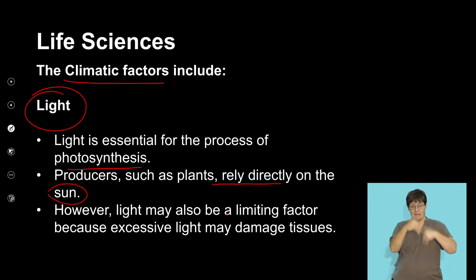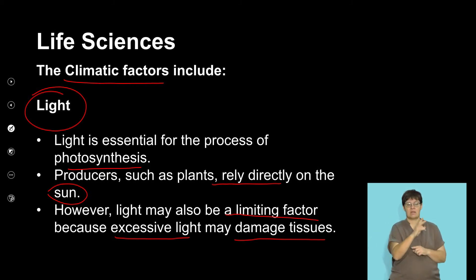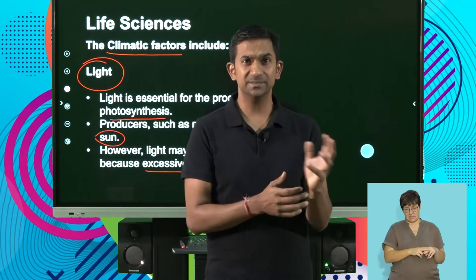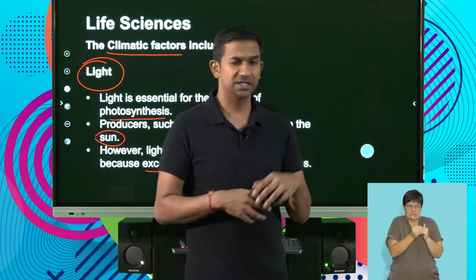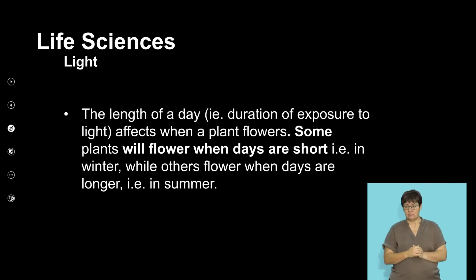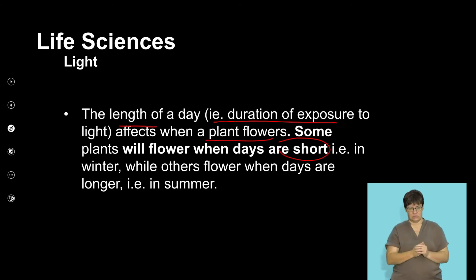Light may be a limiting factor because sometimes when we have excessive light, it may damage plant tissue. There are different types of plants that require different amounts of light. The length of the day — the duration of exposure — affects when a plant flowers. Some plants will flower when the days are short — we refer to them as short day plants. Others flower when the days are much longer, in summer.